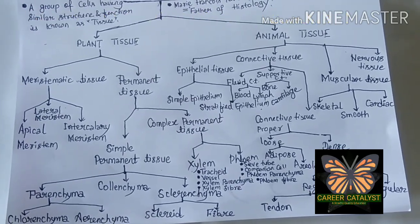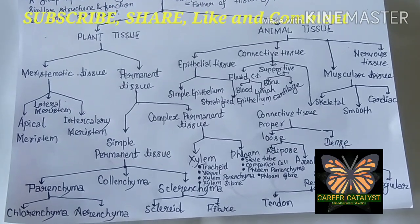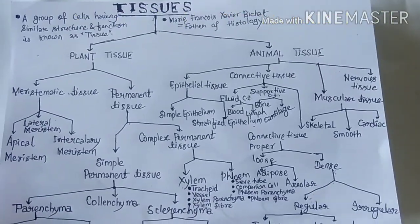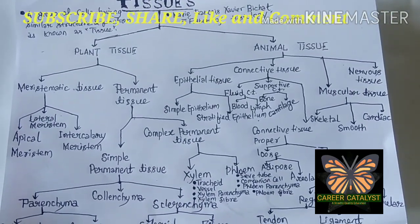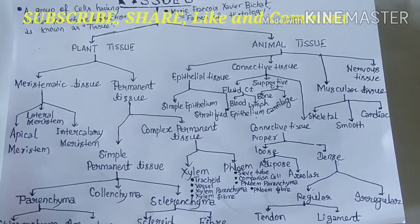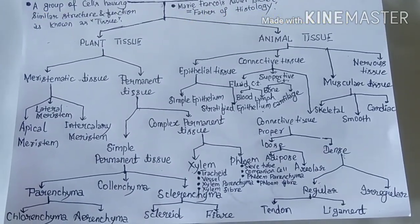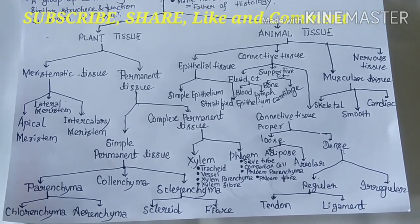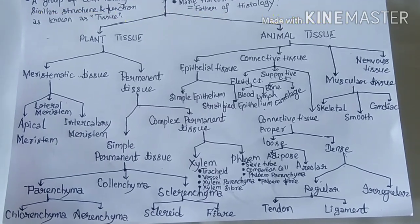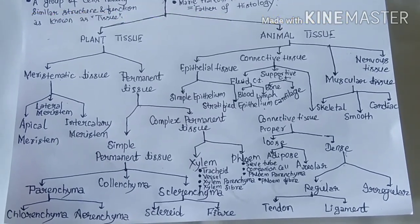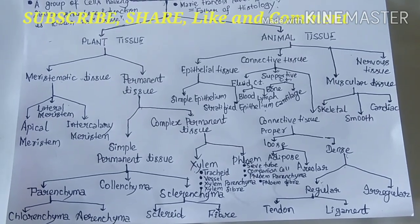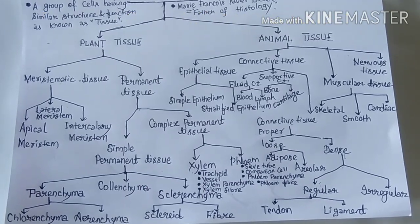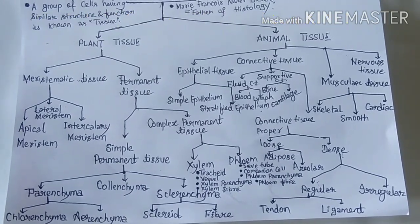Sclerenchyma is of two types: sclereids and fibers. The function of sclerenchyma tissue is to protect plant parts and provide mechanical support. Any plant part that appears very hard is due to the presence of sclerenchyma tissue. So these are the three types of simple permanent tissue: parenchyma, collenchyma, and sclerenchyma.